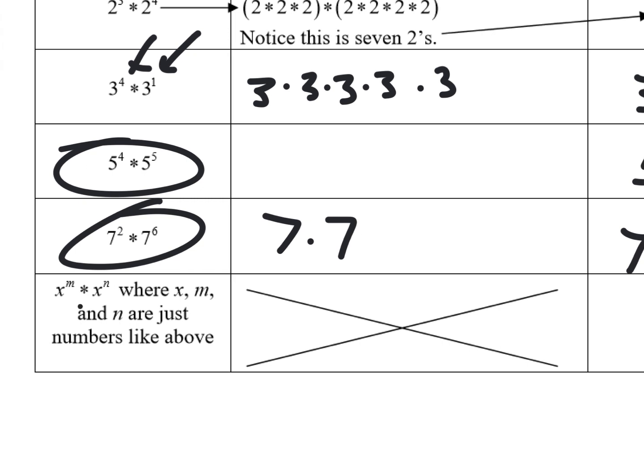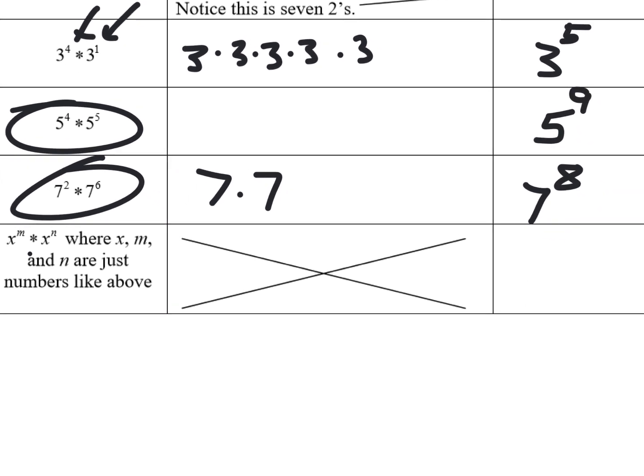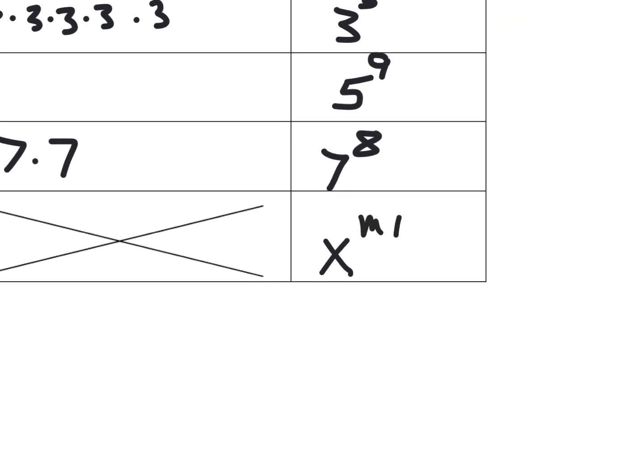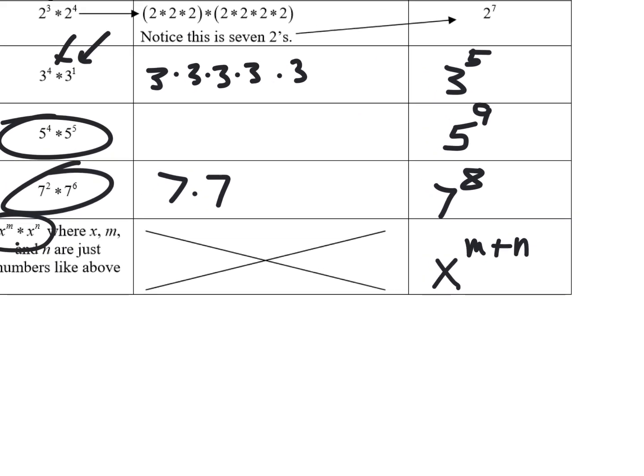So what if it's X to the M times X to the N? Would you agree that the answer is X to a power? Then the only question is, what power? What do you think? X to the M plus N. Yep. You add the powers. On this kind, you add them. So M plus N. Or the other way around. N plus M or M plus N. You'd add the powers.